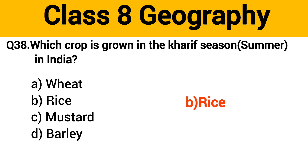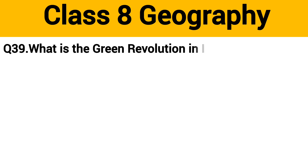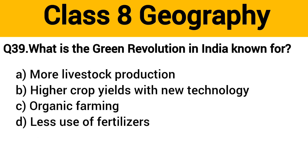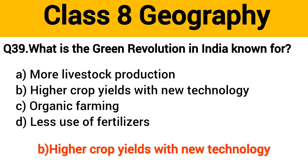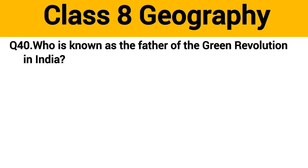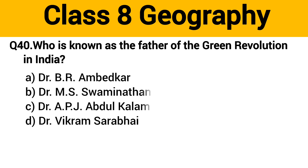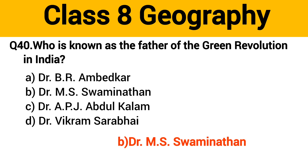Question number 38: Which crop is grown in the Kharif season in India? Question number 39: What is the Green Revolution in India known for? The right answer is option B: higher crop yields with new technology. Question number 40: Who is known as the father of the Green Revolution in India? The right answer is option B: Dr. M.S. Swaminathan.